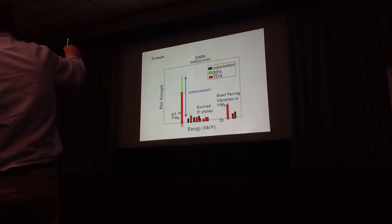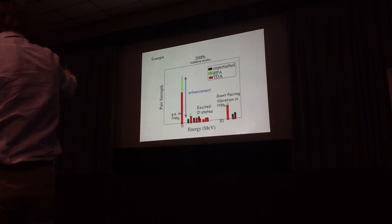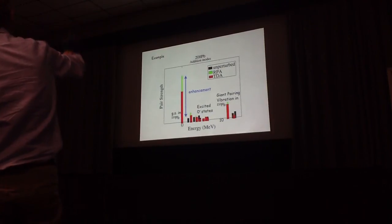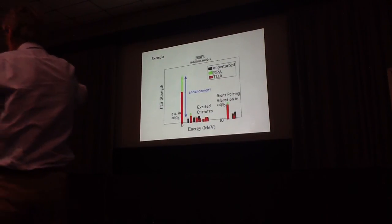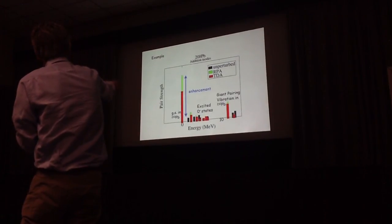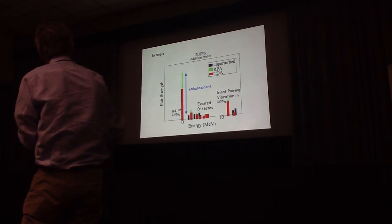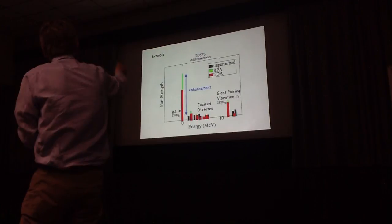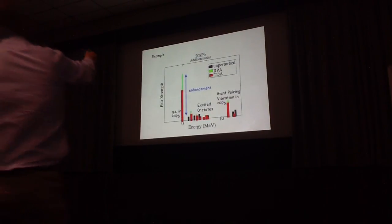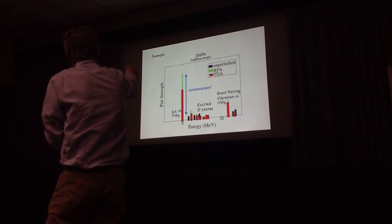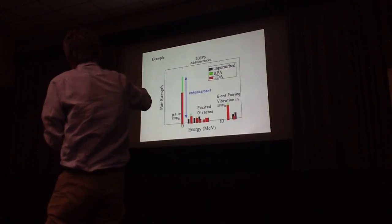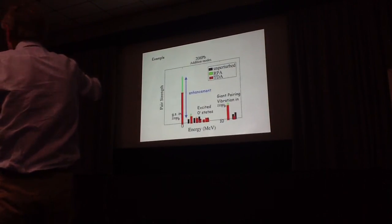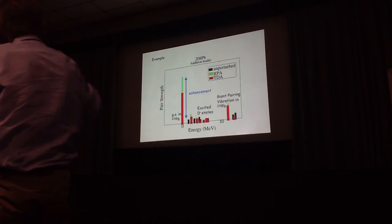This is just an example of two-particle response, in this case, lead-208. And we look at the matrix element between the ground state of lead-208 and all the zero-plus states in lead-210. And the structure of the states in lead-208 are obtained either from the pure shell model, and that's the black line, or in more sophisticated RPA calculation. And you can see how the correlation induced by the RPA is enhancing the pair strength to the ground state.